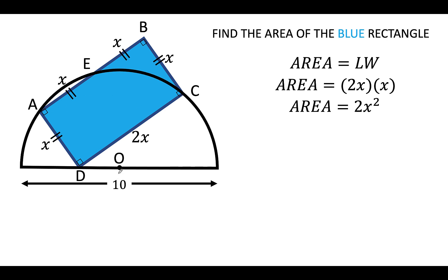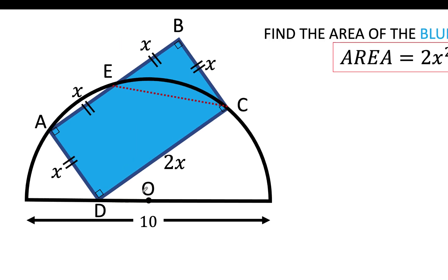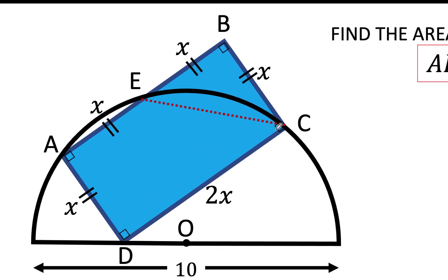But for that, the first thing that we are going to do is connect points E and C and we will concentrate on this yellow triangle. What do we know about that triangle? Notice that we have here a 90 degree angle and therefore this yellow triangle is a right triangle. Also, the length of side EB and the length of side CB are equal. They are both equal to x. So this yellow triangle is an isosceles right triangle.